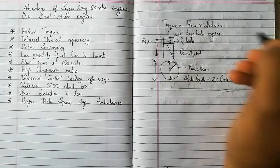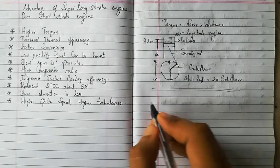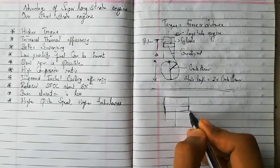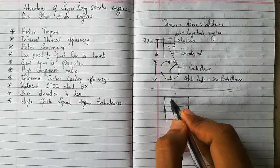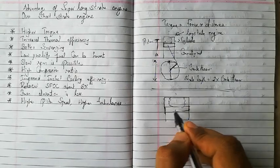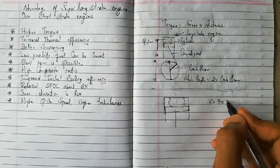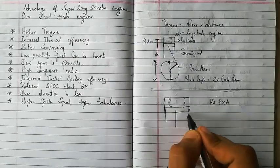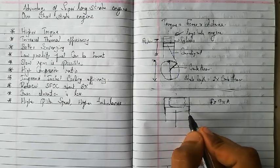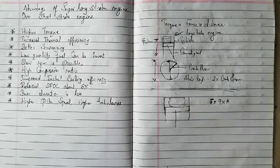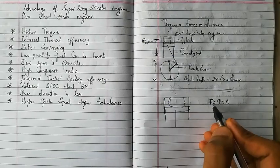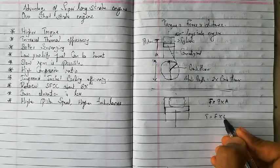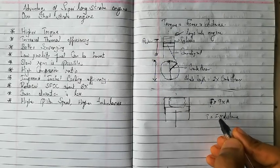In a short stroke engine with a larger bore diameter, the combustion takes place and pressure acts over a larger piston area. Since force equals pressure multiplied by area, a larger bore area produces more force. So short stroke engines can also produce more torque by increasing force rather than distance.